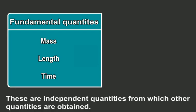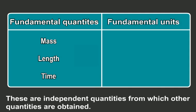They are independent quantities from which other quantities can be obtained. A unit of fundamental quantity is known as a fundamental unit. Kilogram, meter, and second are examples of fundamental units. These are the units of mass, length, and time, respectively.